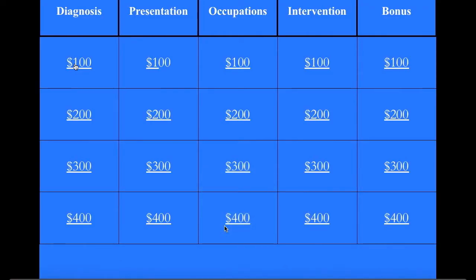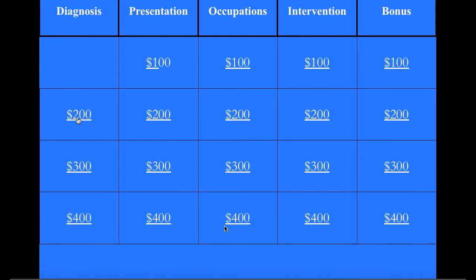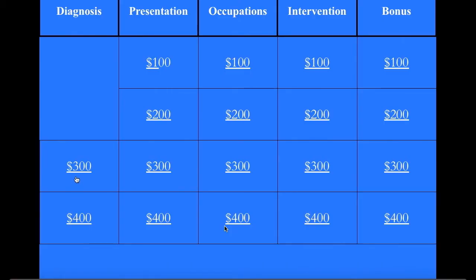Diagnosis for 100: A person diagnosed with this disorder shows symptoms in their ability to interact socially and communicate. What is autism spectrum disorder? Diagnosis for 200: A person with ASD has this etiology. What is idiopathic?